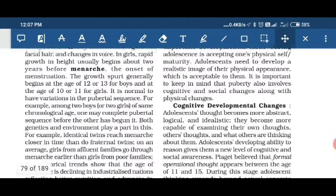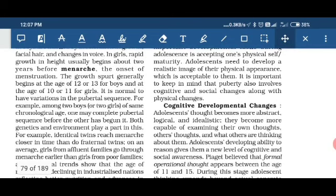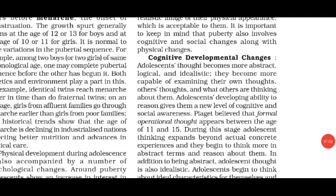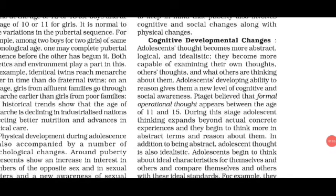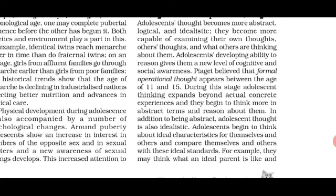Now we will discuss cognitive developmental changes in adolescence. Under cognitive development, adolescents become more abstract, logical and idealistic. According to Piaget's theory, at this age the child reaches formal operational thought, which includes children from age 11 to 15. In this stage, children can understand abstract terms and reason about anything. They also develop idealistic standards against which they compare their own characteristics.